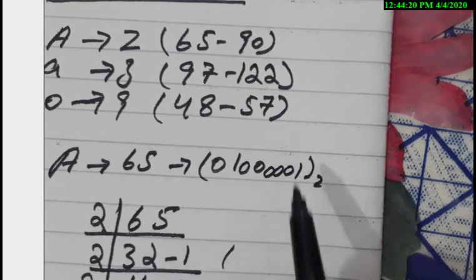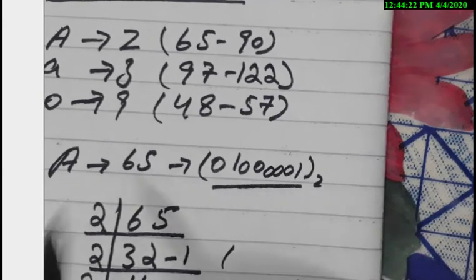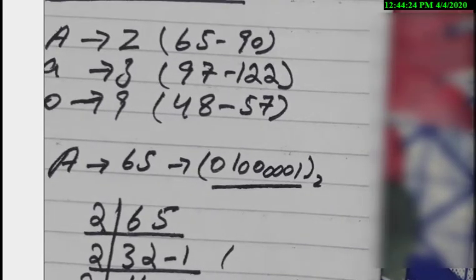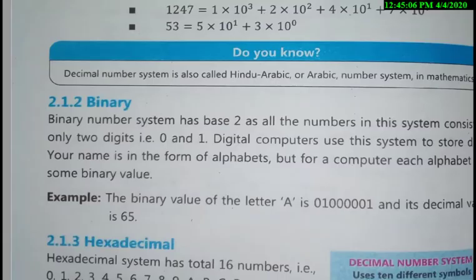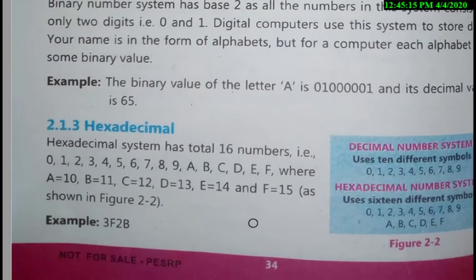We get the binary number 1000001 from the decimal code 65. We can convert all numbers using this same division method. After completing the binary number system, we move on to the next number system, which is the hexadecimal number system.